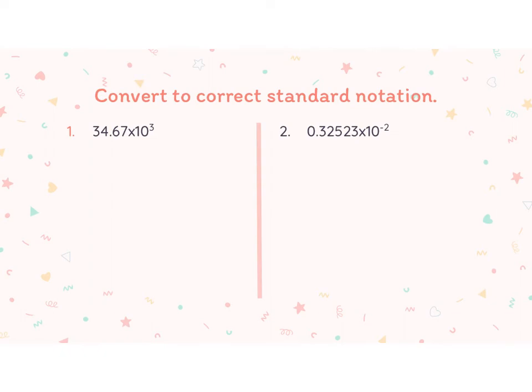Okay, so convert to the correct scientific notation. In this first one, we want to find an error and fix it. There are two digits in front of the decimal point, so I need to move my decimal point back one place. That means my exponent needs to go up one place to balance it — moving the decimal back makes the number smaller, so the exponent gets bigger. So my number here would be 3.467 times 10 to the fourth power.